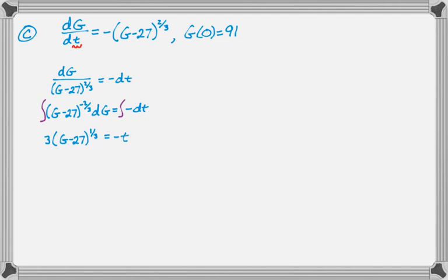I like to put the plus c on the side with the independent variable, which you can tell is the independent variable because it's the denominator of dg/dt. Now I'm going to solve for c using the initial condition, which was t equals zero and g equals 91. So that's three times (91 minus 27) to the one-third equals c because of the zero. 91 minus 27 is 64, the cube root of that is 4, so I get that c equals 12.